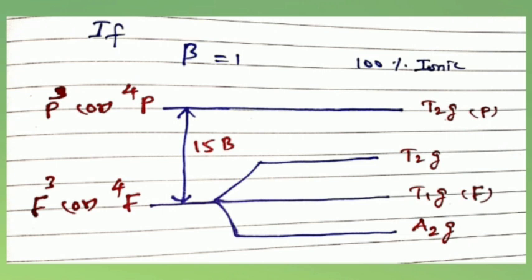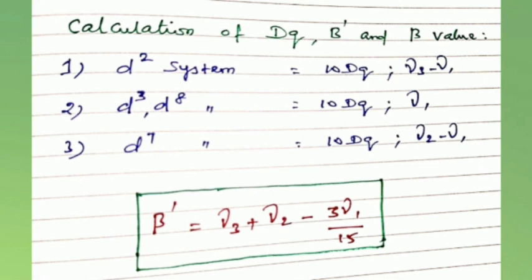Calculation of Dq and β' complex value: for d² system 10Dq = ν₂ - ν₁; for d³, d⁸ system 10Dq = ν₁; for d⁷ system 10Dq = ν₂ - ν₁. The β' complex value equals (ν₃ + ν₂ - 3ν₁)/15. Then nephelauxetic series.